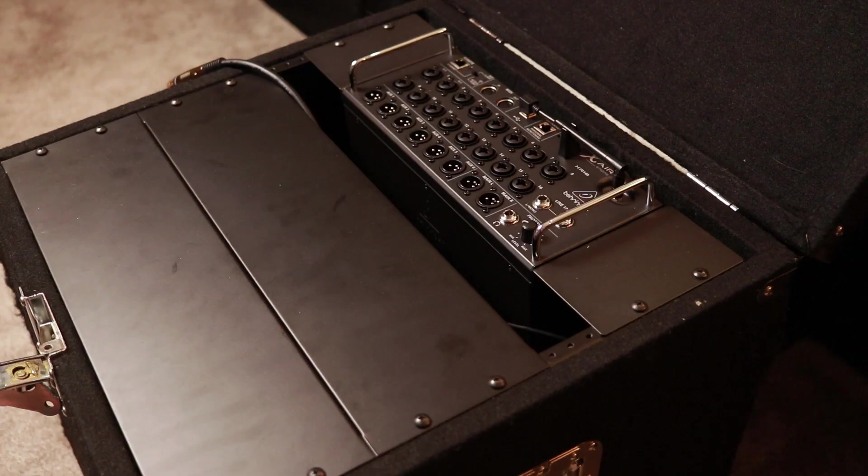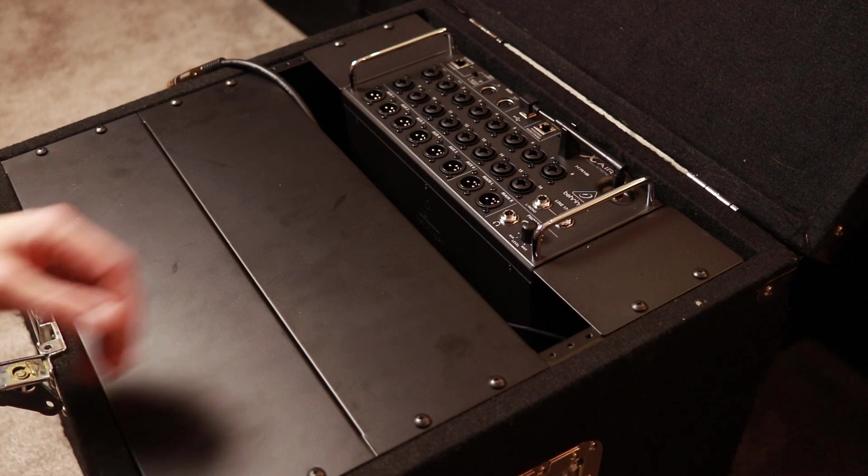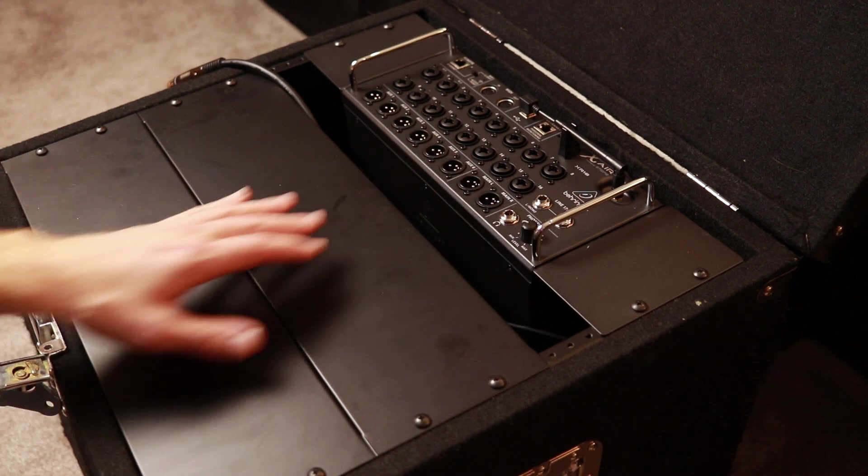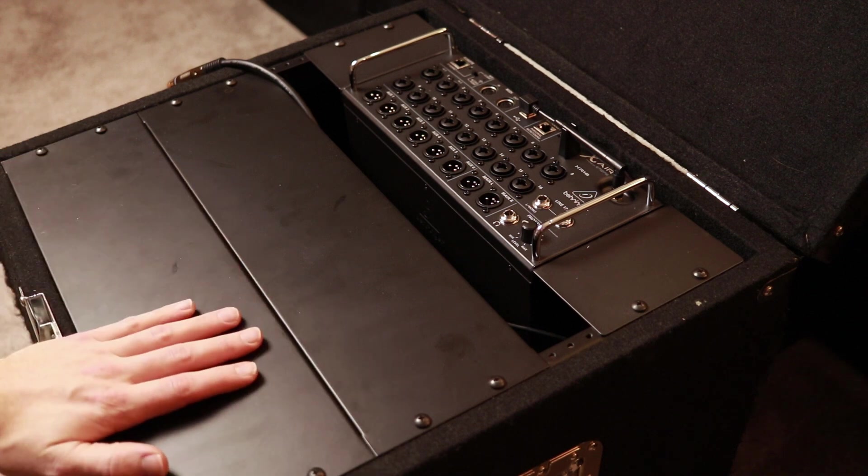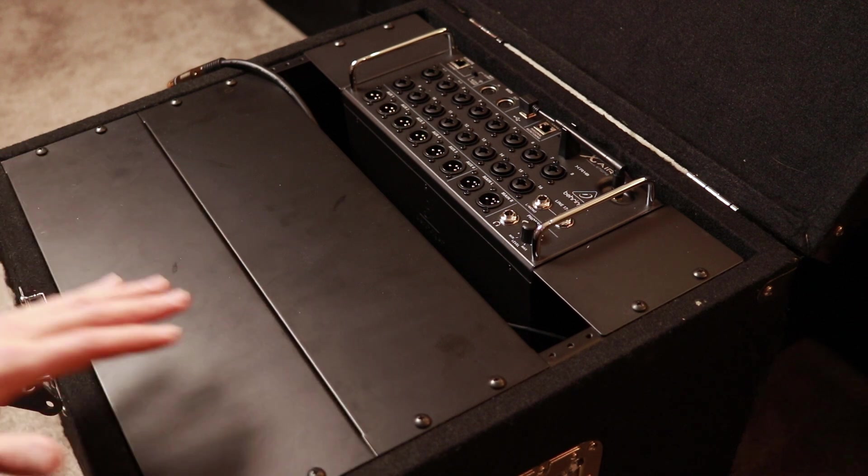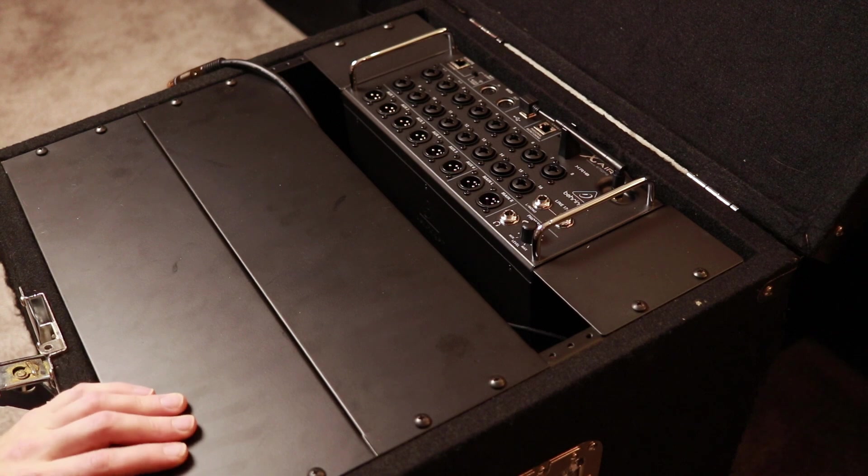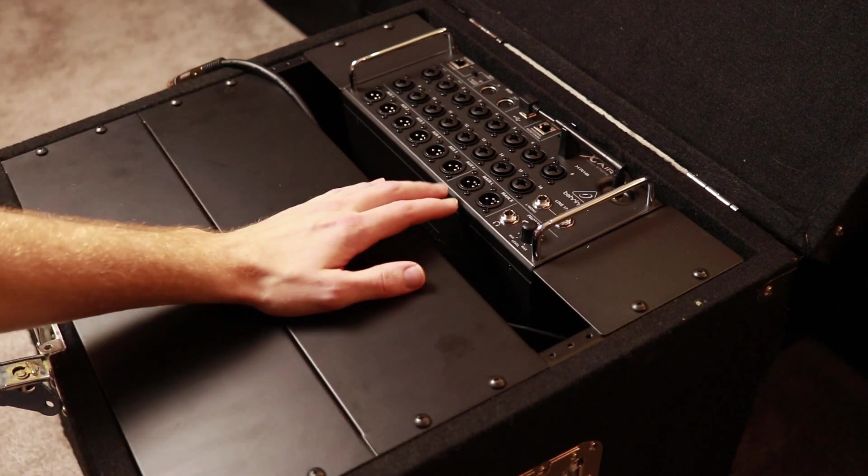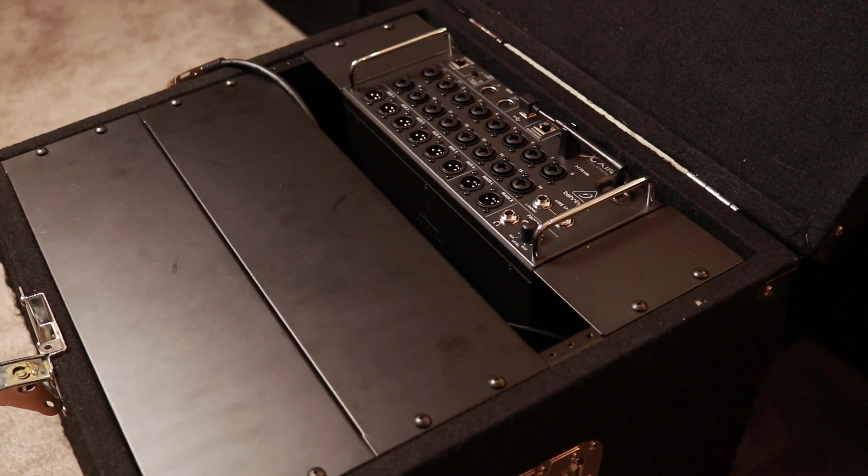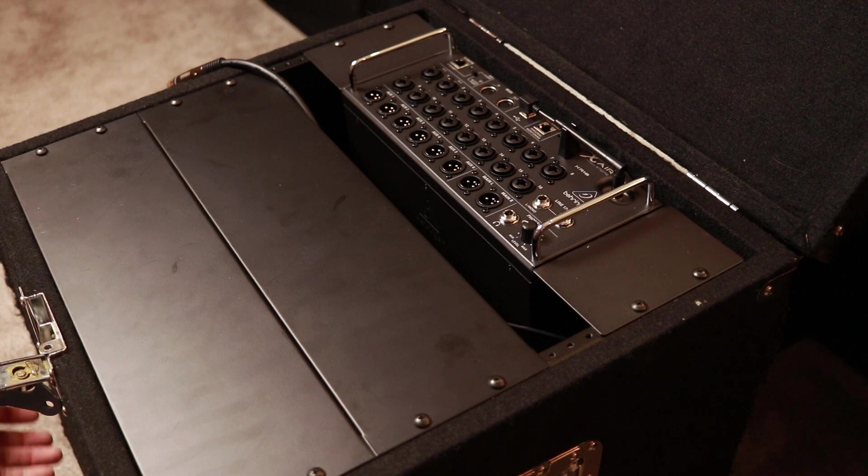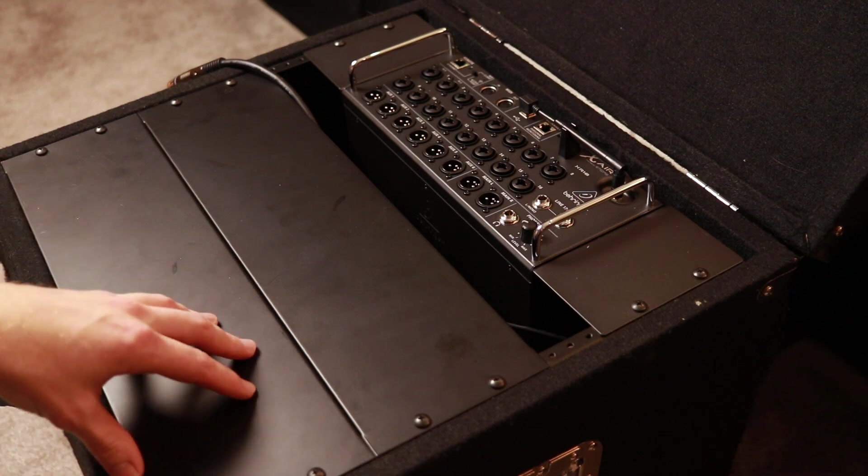So I have here the rack case for my PA system and I just got the Behringer X-Air XR18 mixer, which is pretty cool. And whenever possible for live setup, I like to keep as many things plugged into each other as I possibly can. So I would love to leave plugged in the output of my Behringer mixer into my power amplifier and also an auxiliary output to go to our headphone distribution splitter thing that's in the rack.